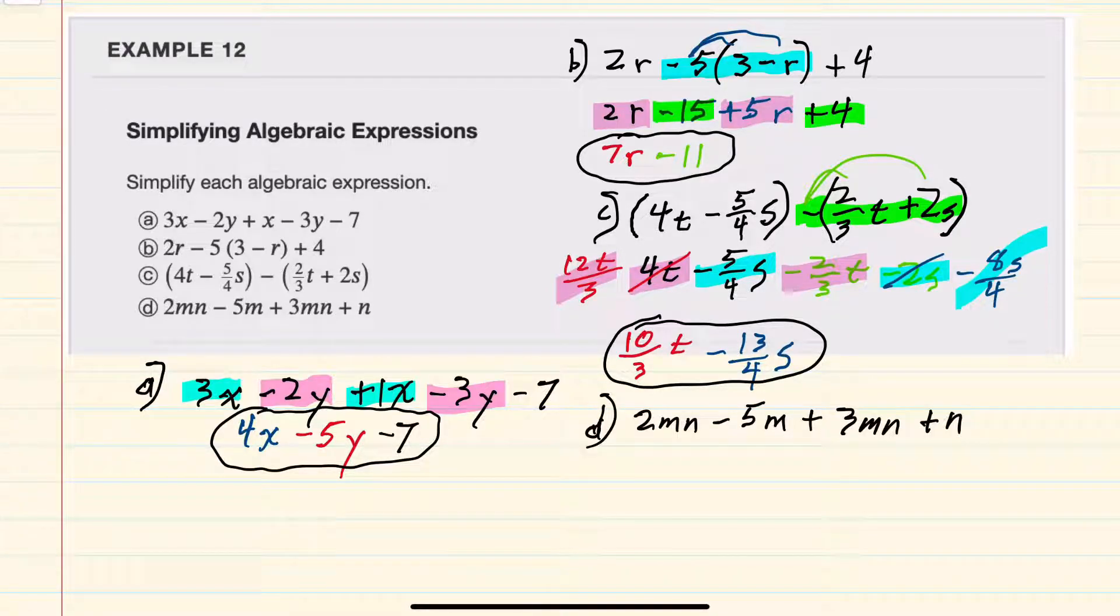For d, there are no parentheses, so we can go straight to combining like terms. 2mn plus 3mn would be 5mn. Minus 5m does not have a like term to combine it with, so I will bring that down. And the same is true for the plus n. There are no like terms to combine, so I will bring that down as well. This is our simplified d expression.